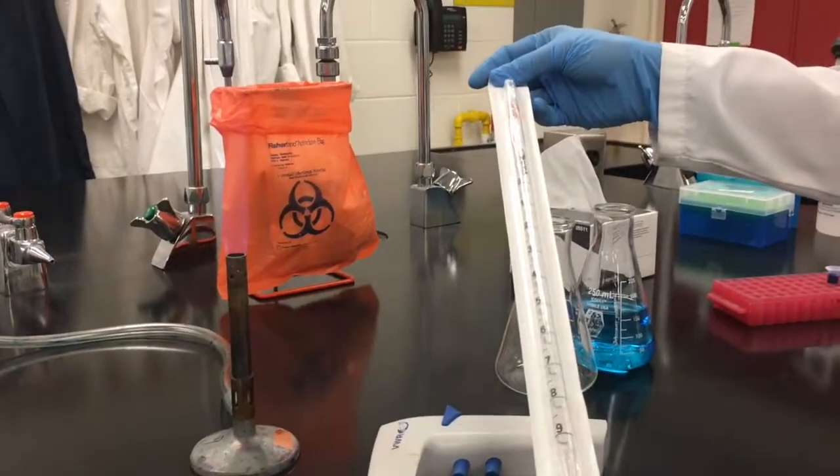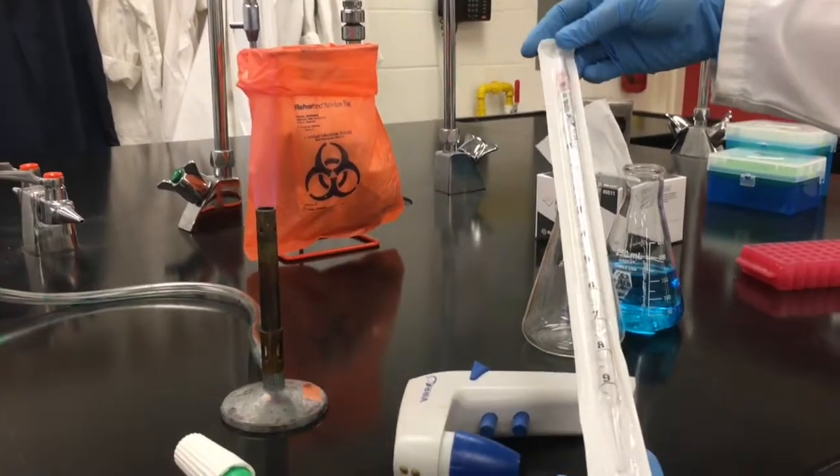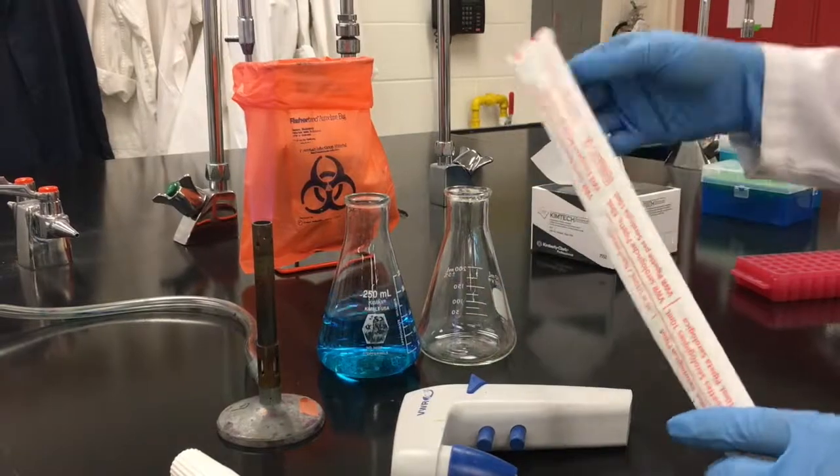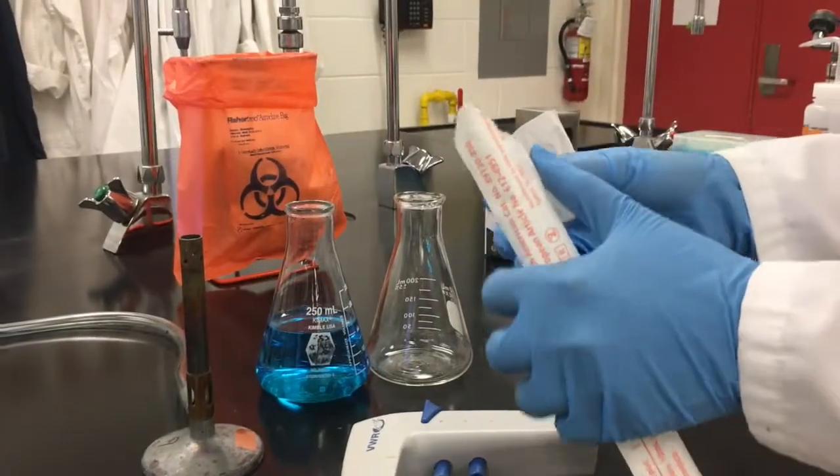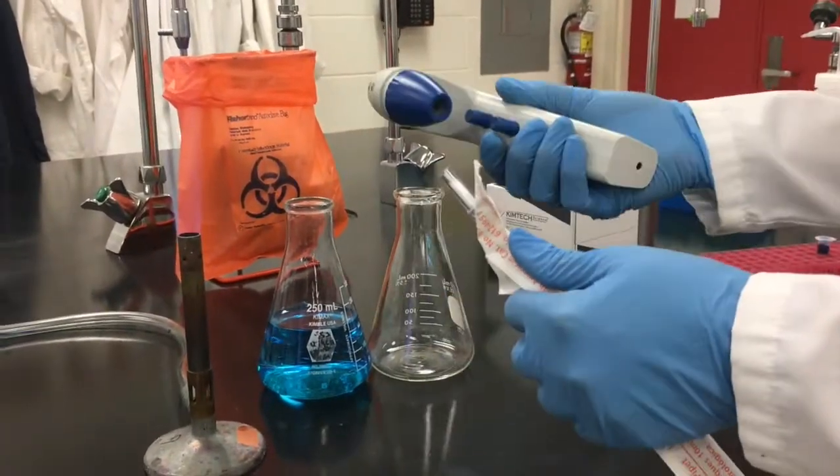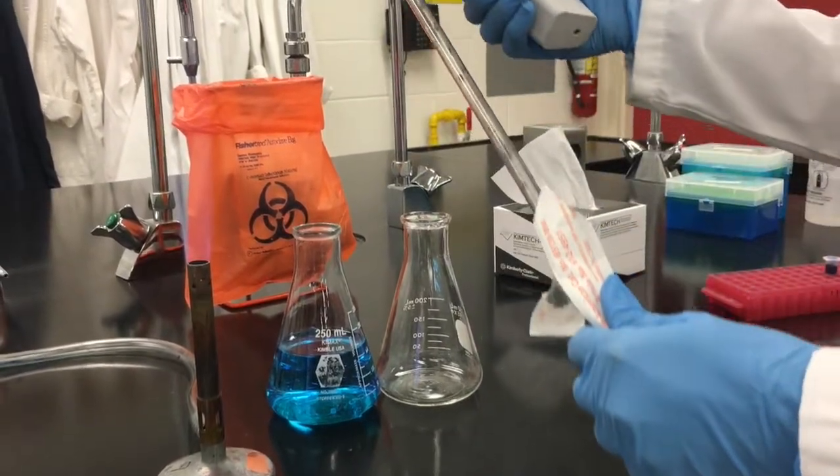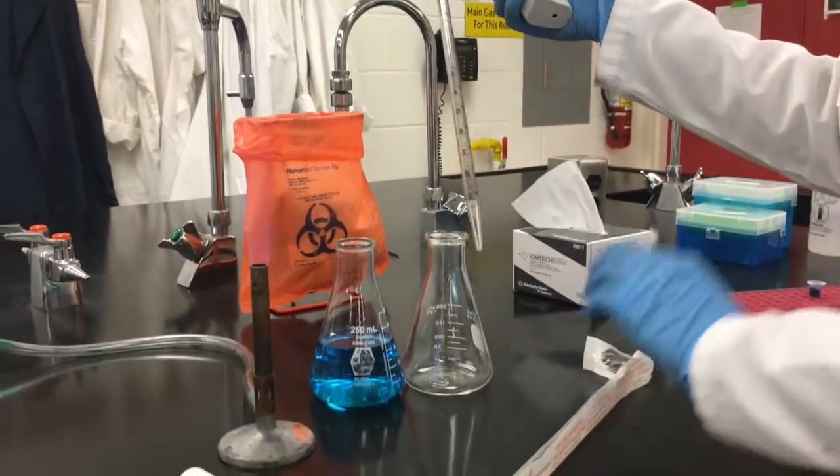We have selected a sterile plastic 10 mil serological pipette for a demonstration of this technique. Open the wrapper by peeling it apart and set it aside as we will need it for disposal purposes. Grasp the tip close to the end to be inserted into the pipetter. When using a glass tip this is very important to reduce the risk of breakage and causing injury.